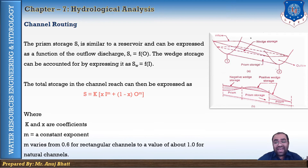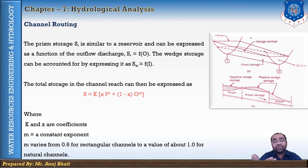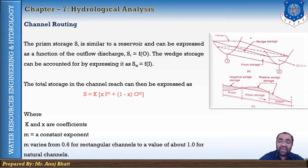The prism storage S is similar to reservoir storage and can be expressed as a function of the outflow discharge. The wedge storage Sw can be expressed as a function of inflow. The total storage in the channel reach is expressed as: S = K × [X × I^M + (1 − X) × O^M], where K and X are coefficients and M is a constant exponent. The value of M varies from 0.6 for rectangular channels to 1.0 for natural channels.